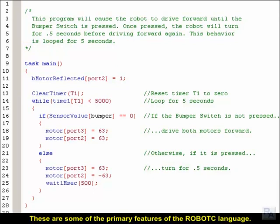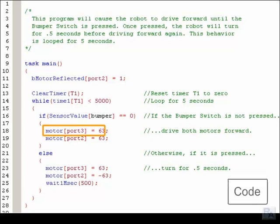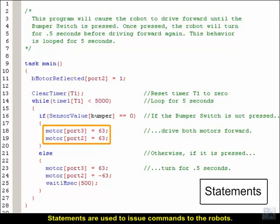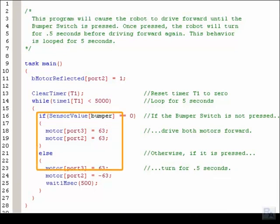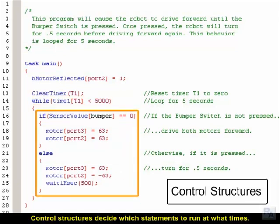These are some of the primary features of the Robot C language. Code is entered as text, which builds statements. Statements are used to issue commands to the robots. Control structures decide which statements to run at what times.